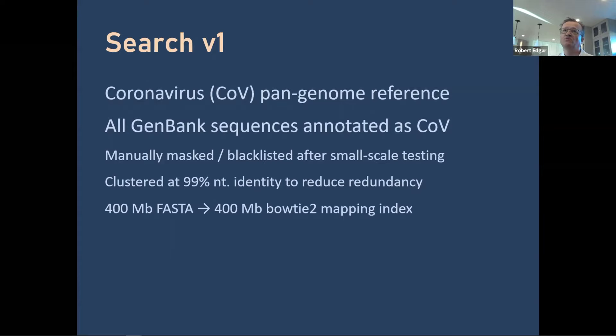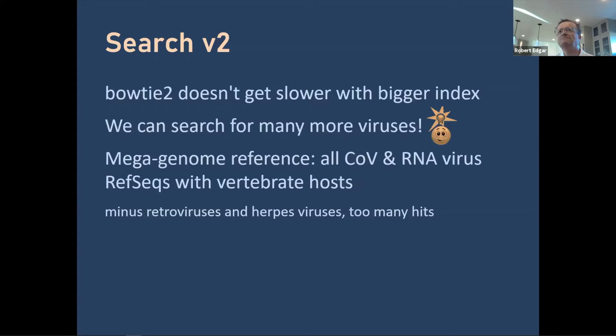In our first attempt, we lumped all the coronaviruses we had into one reference. There are some problems with low-complexity sequences and false positive matches to human, so we did some small-scale testing, blacklisting, and masking. We did a little clustering to reduce redundancy and ended up with a 400-megabyte FASTA file — a 400-megabyte mapping index — which easily fits into the cheap Amazon instances.